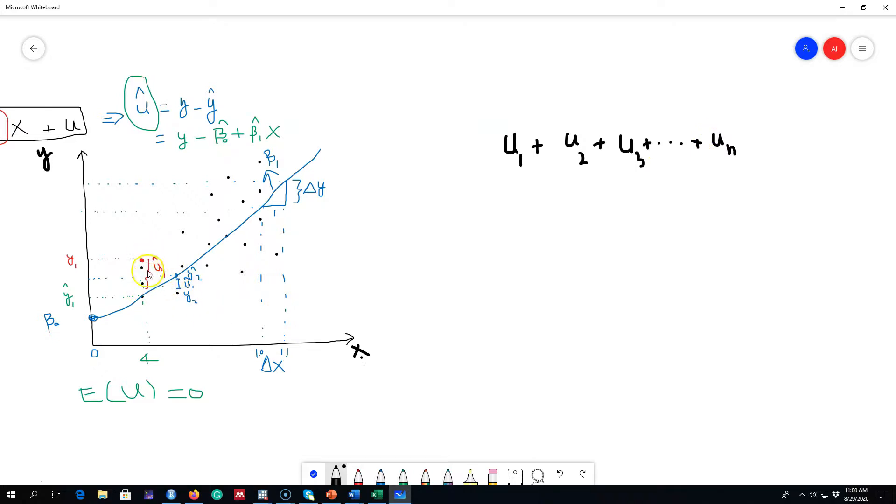To account for this, what we can do is we can take the square of these numbers to make them positive all the time and we can write it down as the summation of ui where i is from 1 to n. We want to minimize these errors.